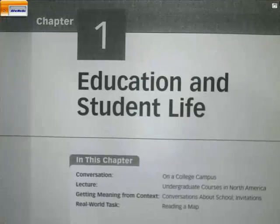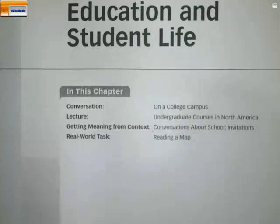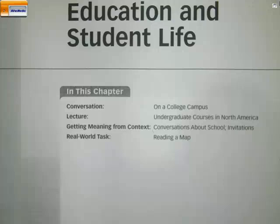This is unit one, and our topic in this unit is Education and Student Life. Education is one of our vocabulary words. In this chapter we have, as always, four sections. We begin with a conversation. Before the conversation, we're going to introduce the topic, discuss some vocabulary, and look into perhaps some pronunciation issues, like reductions or particular sounds. Then next time, in lecture two, we go on to the second part, where we have the lecture, the context, and the task.